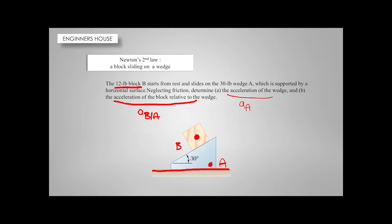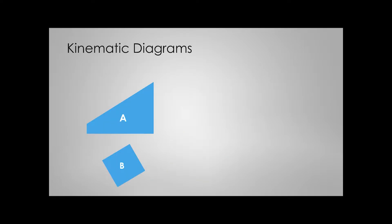First we need to solve the problem kinematically and then talk about the kinetics. We start with kinematics. Here's body A. This body is located on a horizontal surface, so it is only moving in the x direction and it is not going up or down.